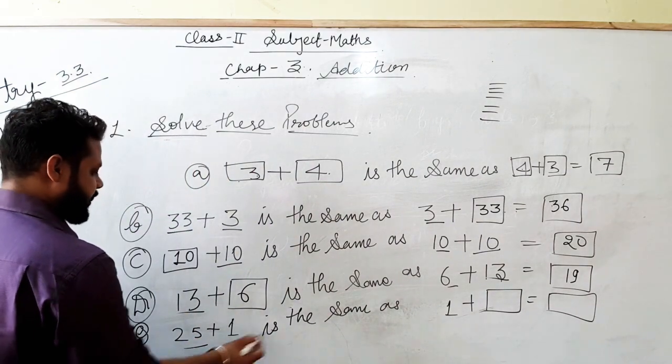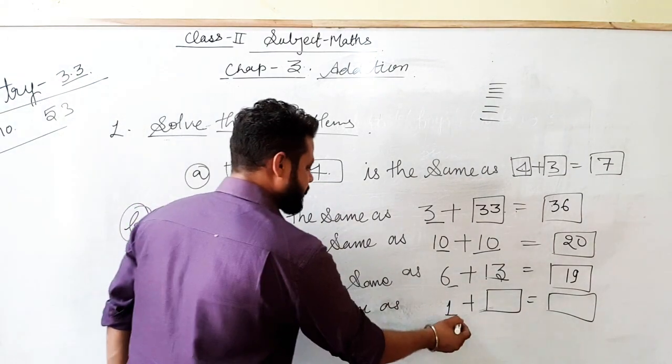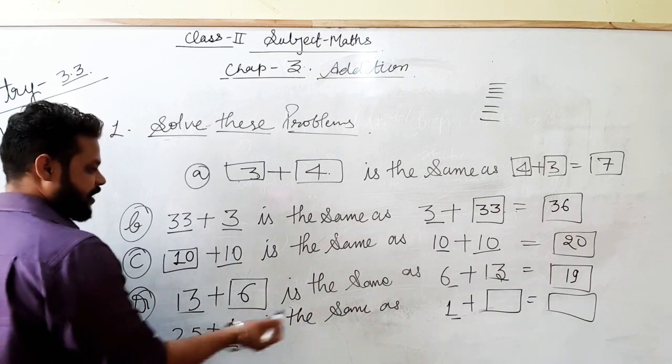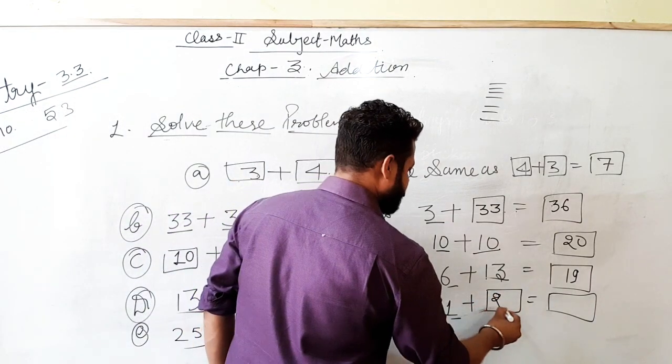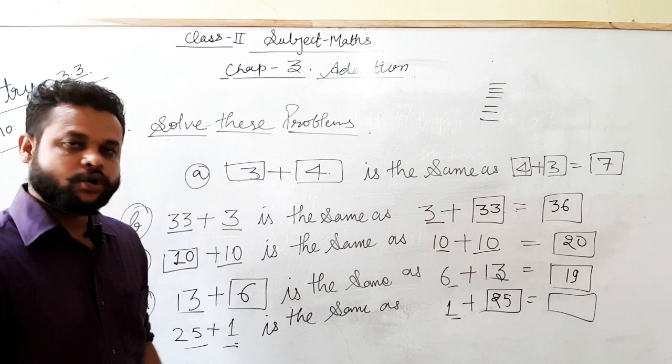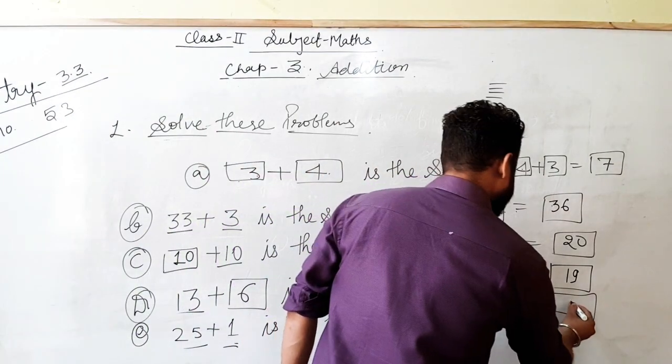25 plus 1 is the same as 1 plus. Abh yhe 1 toh yhe ho gaya? 25. Yhaan a jayega? 25 plus 1 is the same as 1 plus 26. Thik hai?